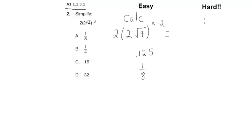The hard way is a little more annoying, but for the math people out there, let me do it for you by hand. So, it's 2 times the quantity 2 times the square root of 4 to the negative 2 power.